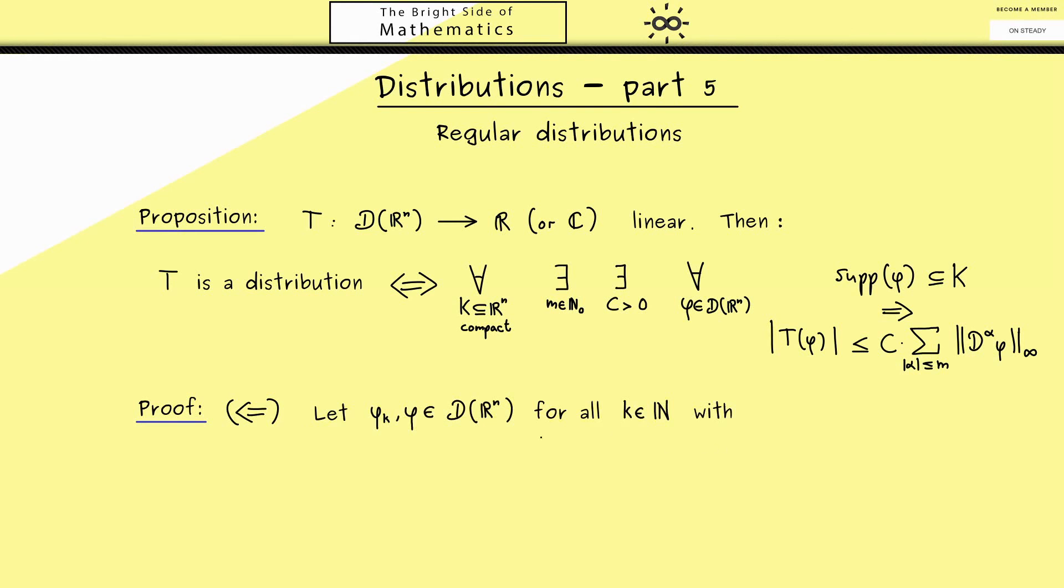In order to show this, let's choose test functions phi and phi_k such that we have D convergence for the sequence phi_k to phi. Then we know by definition there is a compact or bounded set k in R^n.